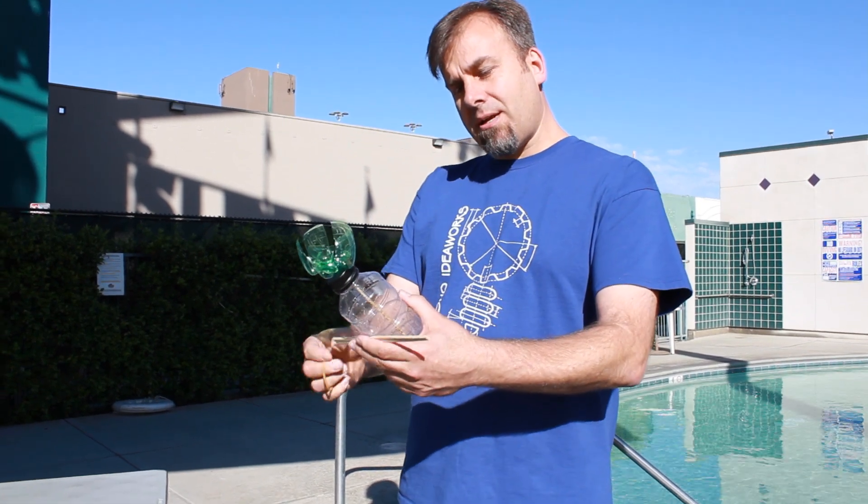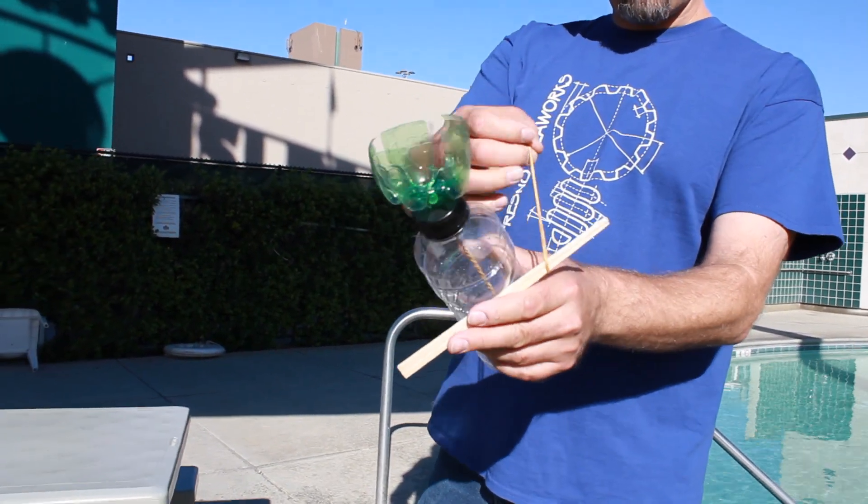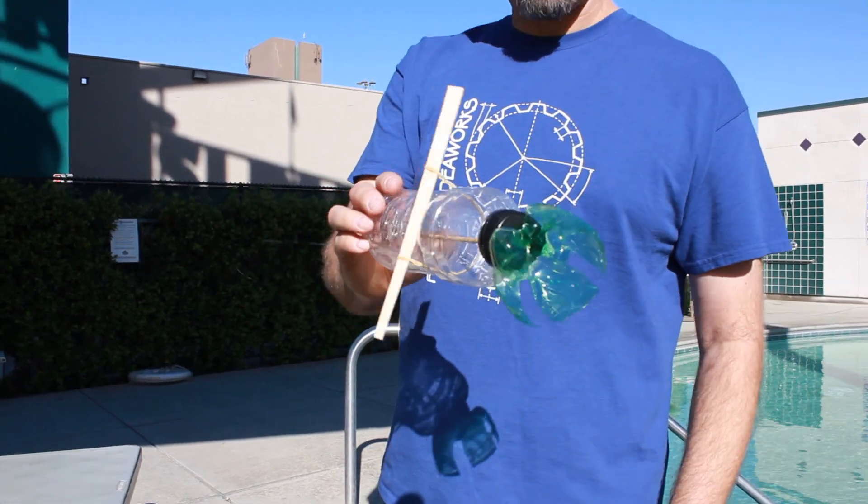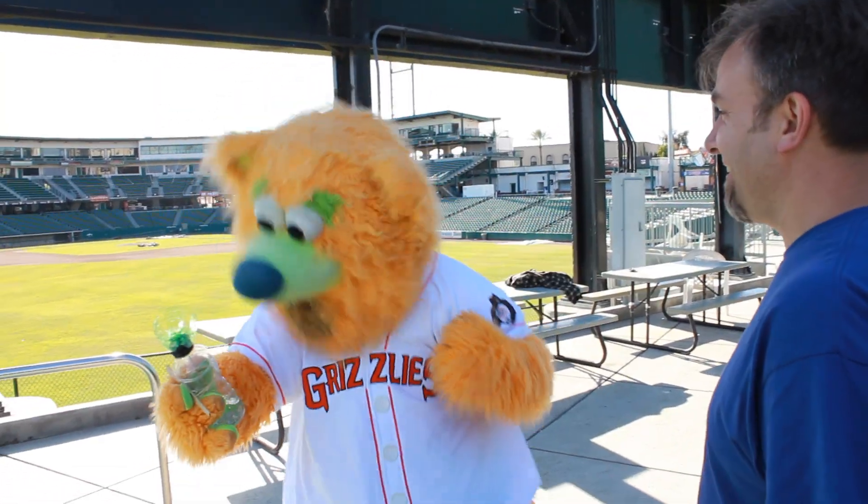Our final step is we're going to take these chopsticks and put them across the side of the bottle, and then hold them on with a rubber band. This will keep the bottle from spinning in the water. And of course, winding it up is the fun part.